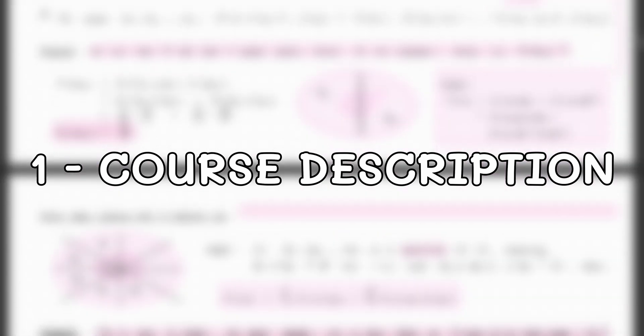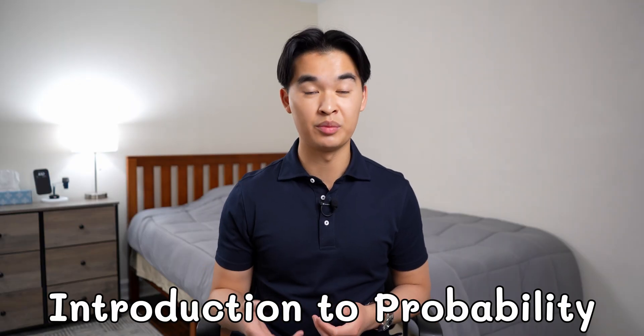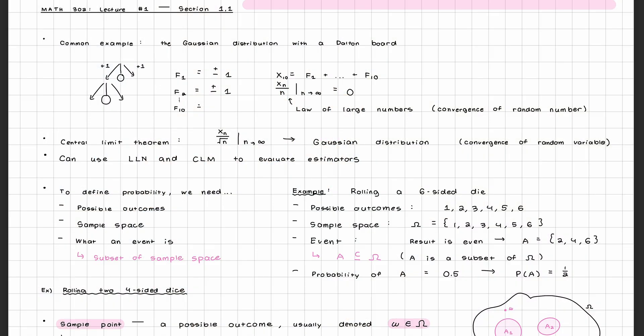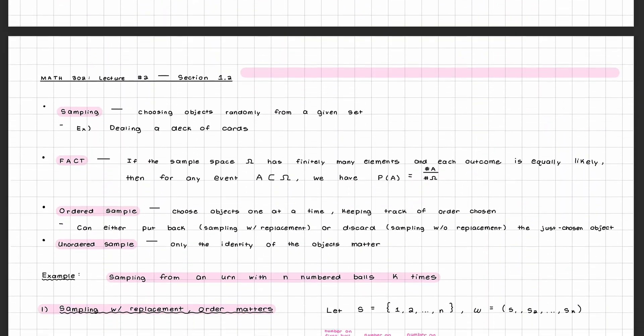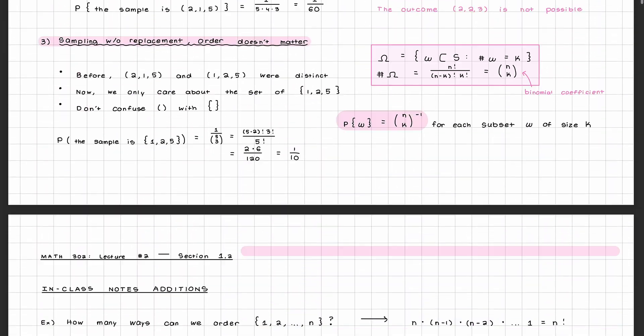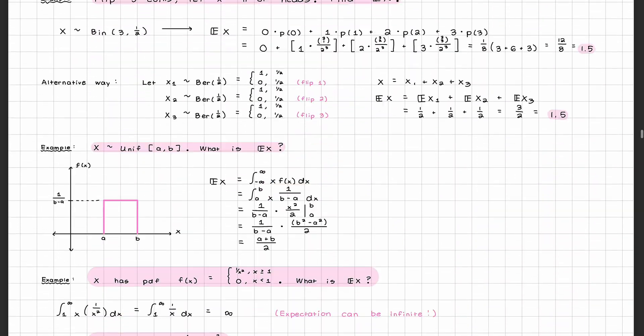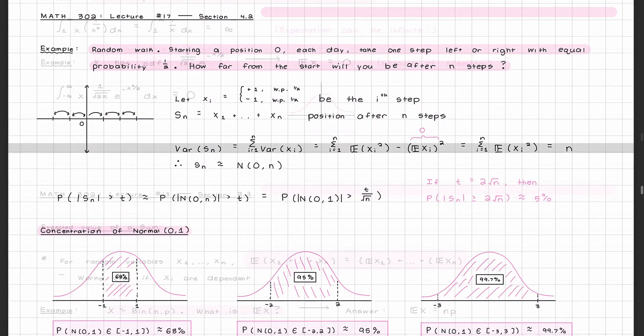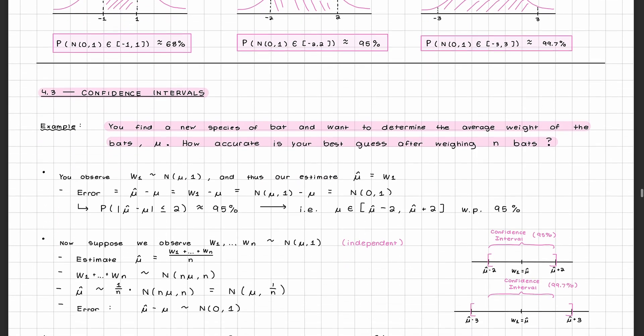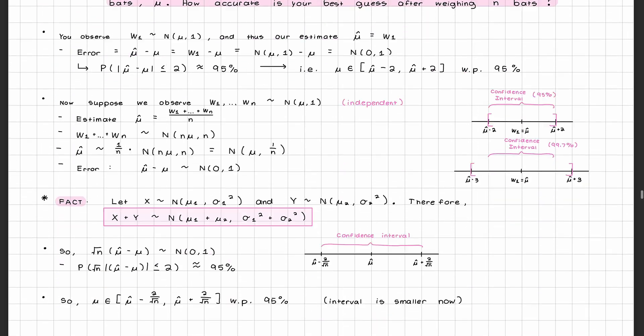So what is Math 302 all about? In this course, you will get an introduction to probability, covering concepts such as sampling, conditional probability, random variables and their distributions, expectation and variance, confidence intervals, and joint probability distributions. As of the making of this video, Math 302 is currently offered in both semesters in the winter term, and then the first semester of the summer term.